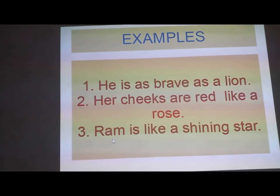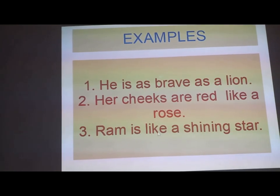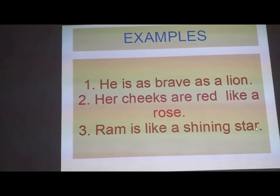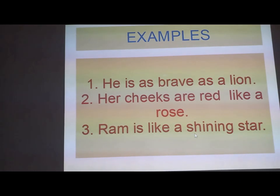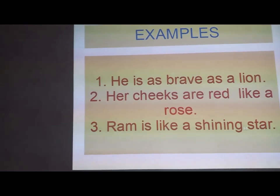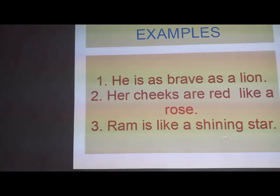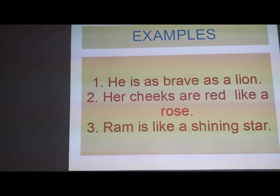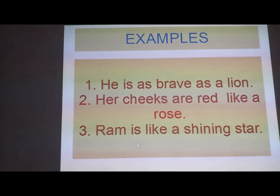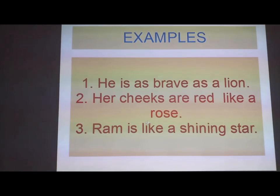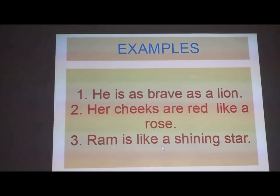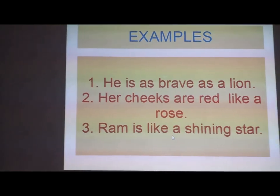Third example is: 'Raang is like a shining star.' جو Raang ہے وہ ایک shining star کی طرح ہے — یعنی ایک چمکتے ستارے کی طرح ہے. اس میں بھی 'like' word کا استعمال کیا گیا ہے جس سے ہمیں پتا چلتا ہے کہ یہ simile ہے.